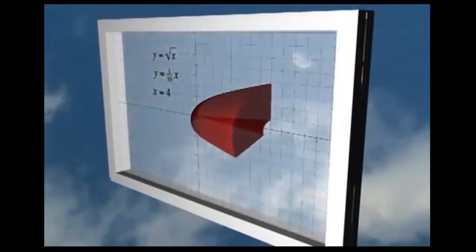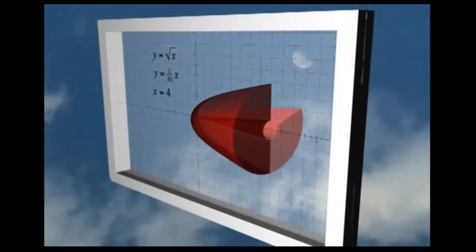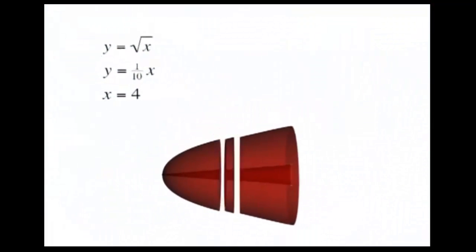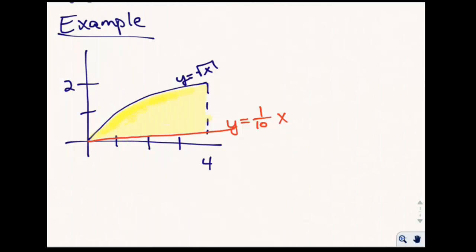Now we're going to rotate this region about the x-axis and find the volume of this solid. We set up our integral according to the formula: the volume equals pi times the integral from c to d of big R of x squared minus little r of x squared, dx.